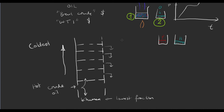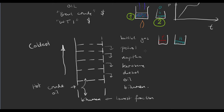Going up the column, at each level the column gets a little bit cooler, and something else will condense out on these trays and flow out of the hole at the side. The fractions of crude oil from top to bottom are: bottled gas, petrol, naphtha, kerosene, diesel, sometimes called oil, and then the lowest one is bitumen. These aren't necessarily pure alkanes — for example, petrol is not just hexane, but will be all alkanes with a chain of about six to eight. And diesel might be C10 to C12.